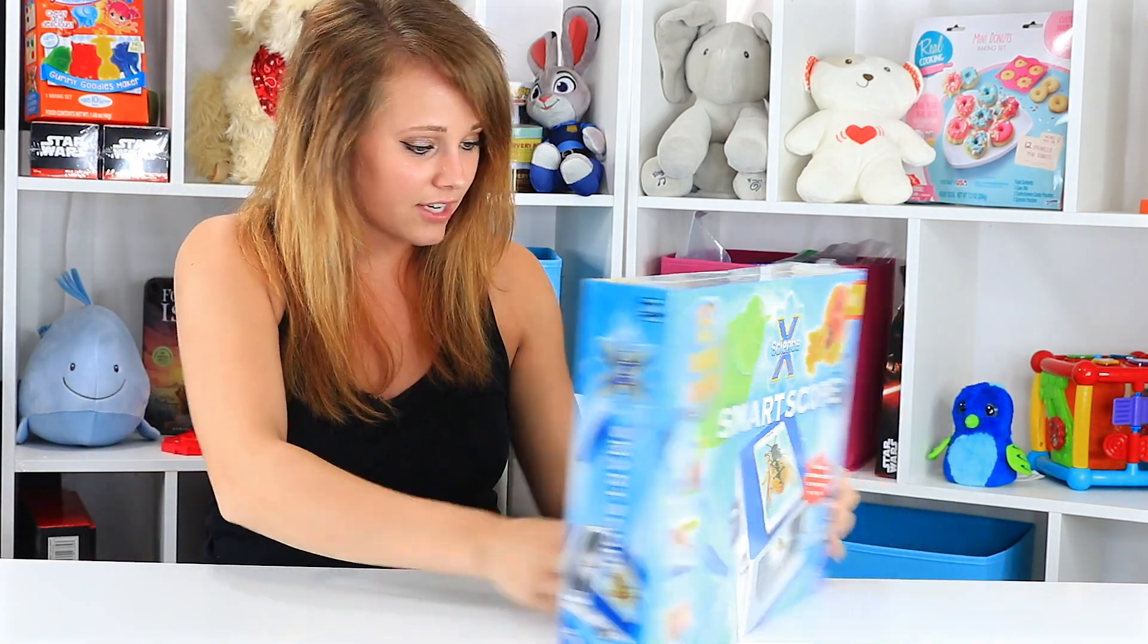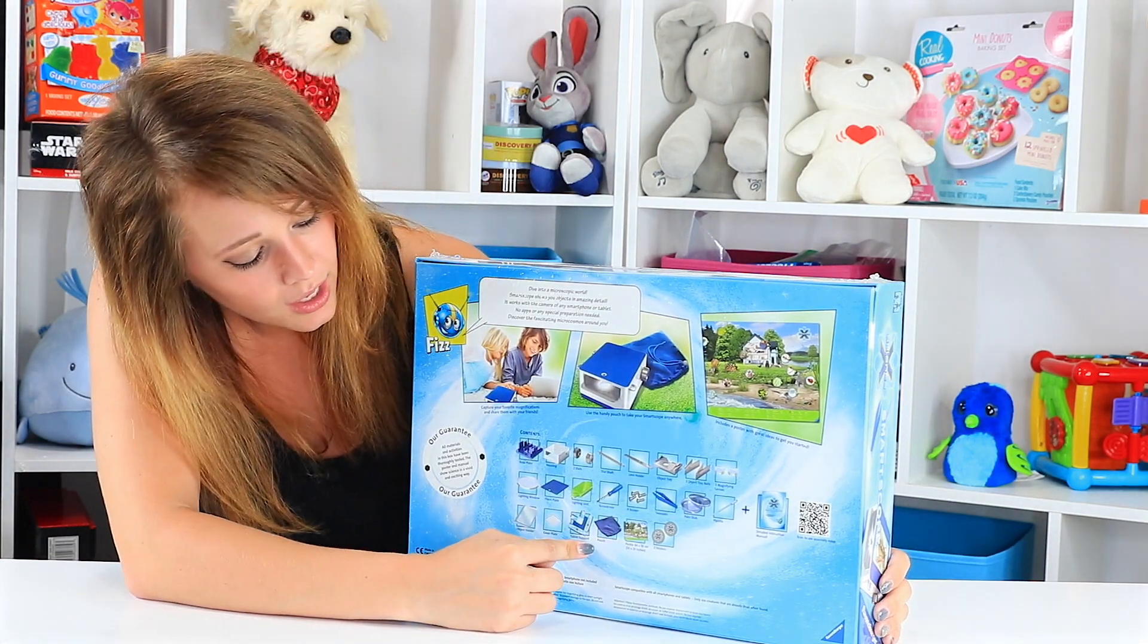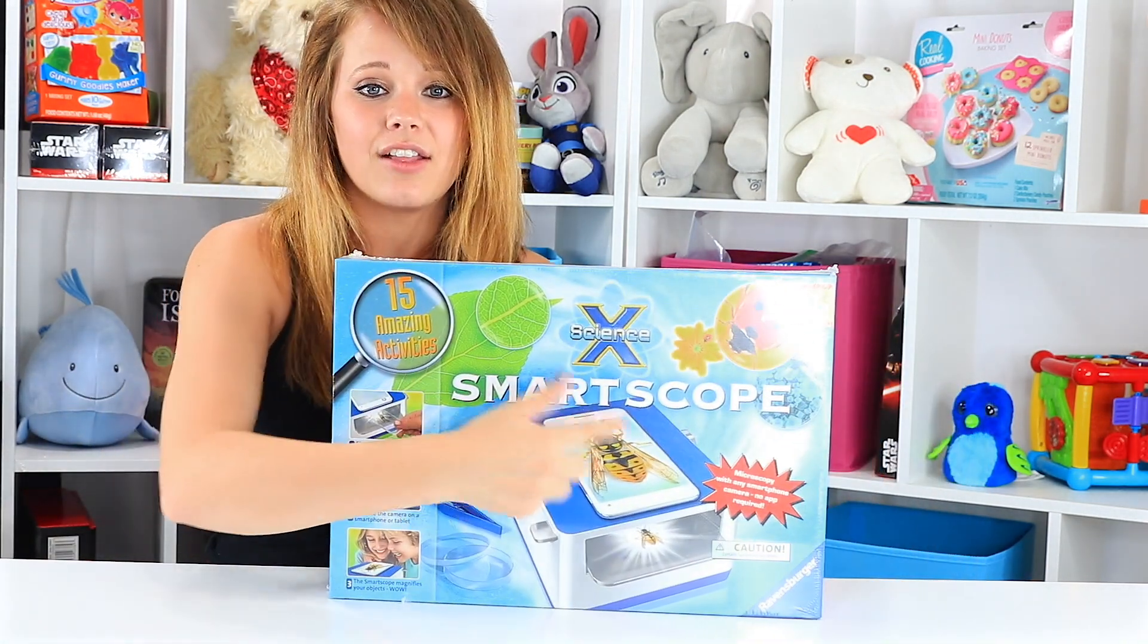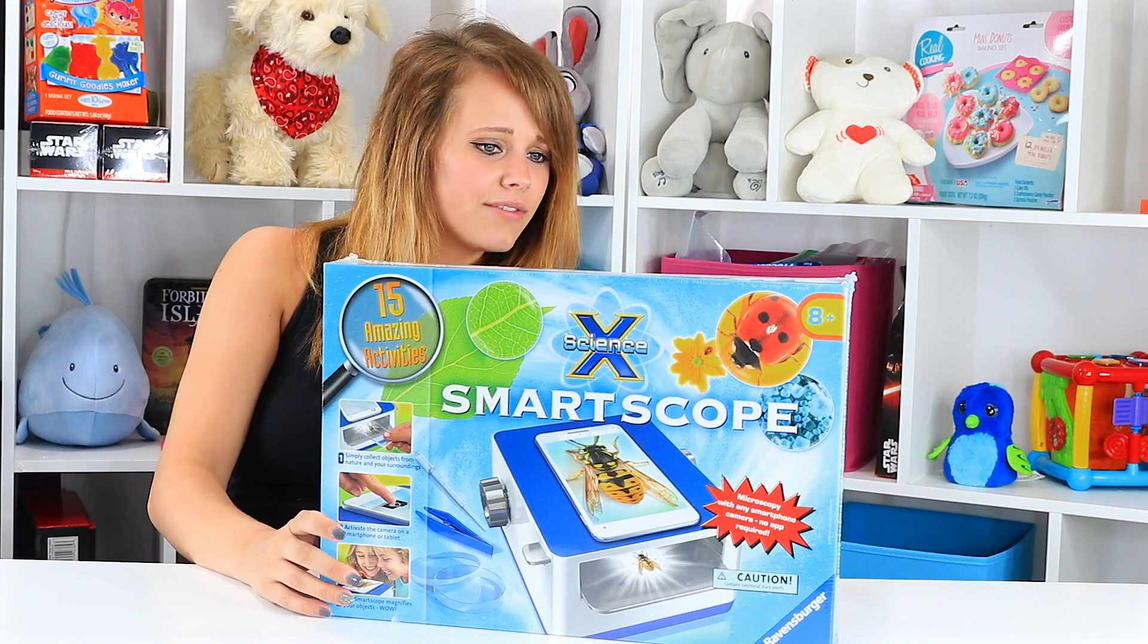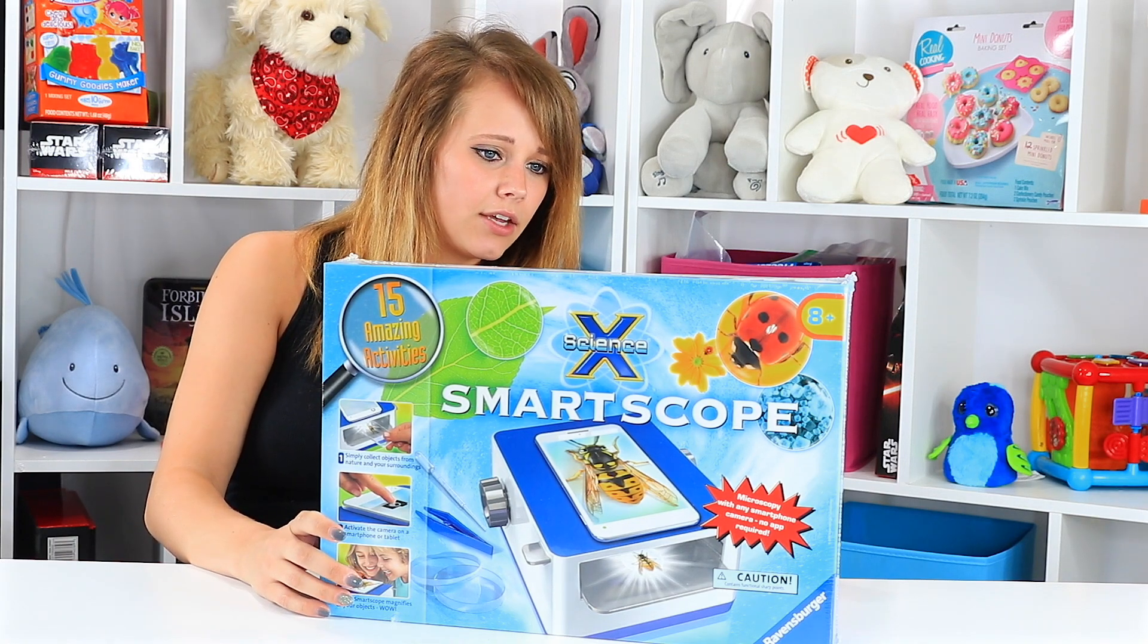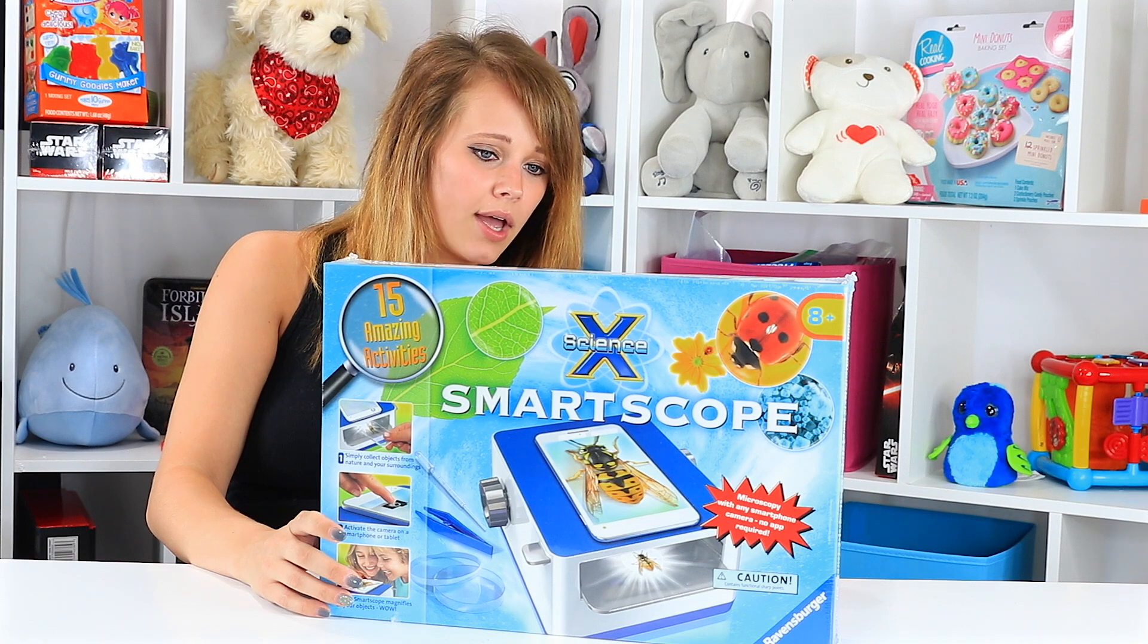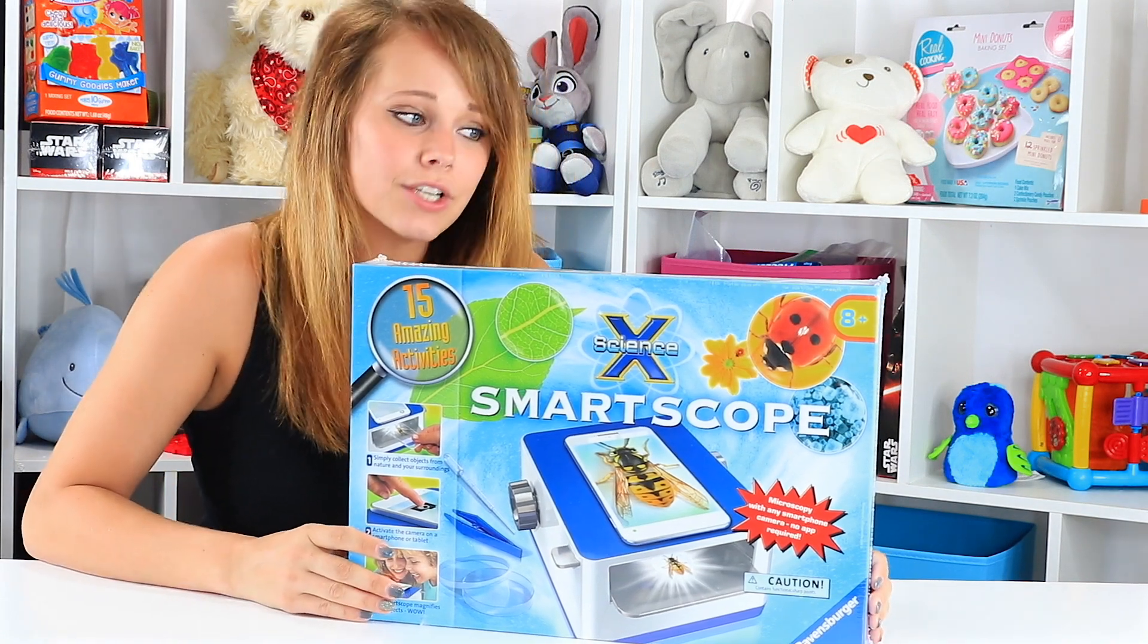It comes with a lot of stuff actually. It's got all the stuff to build the Smart Scope, lighting, clear plates, and everything. That way you can put your object inside and then look on the top and see it all blown up. It says, dive into a microscopic world. Smart Scope shows you objects in amazing detail and works with the camera of any smartphone or tablet. No apps or special prep needed. Discover the fascinating microcosmos around you. So I'm super excited to see how this works.